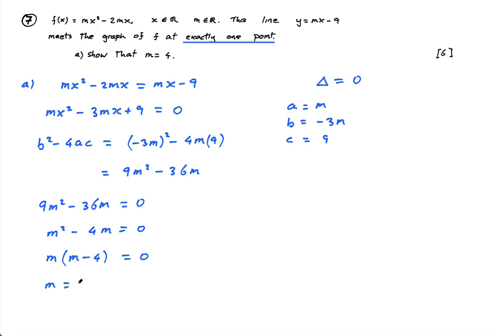m is equal to 0. Or m minus 4 equals 0, which means m is equal to 4. Now, m can't be, and it's important you write this, guys, because you could say, well, m could be 0 or 4.